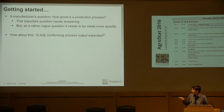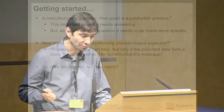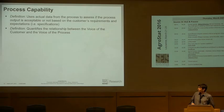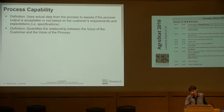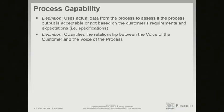Some fundamentals surrounding process capability. Only the manufacturers that go bankrupt don't look at this question: how good is a production process? But it's rather vague, so it needs to be more specific. We could say: is fully conforming process output expected? Non-compliance is hardly good for the business. I propose that process capability can help, but only if the collected data form a basis for action. Without that, maybe forget it.